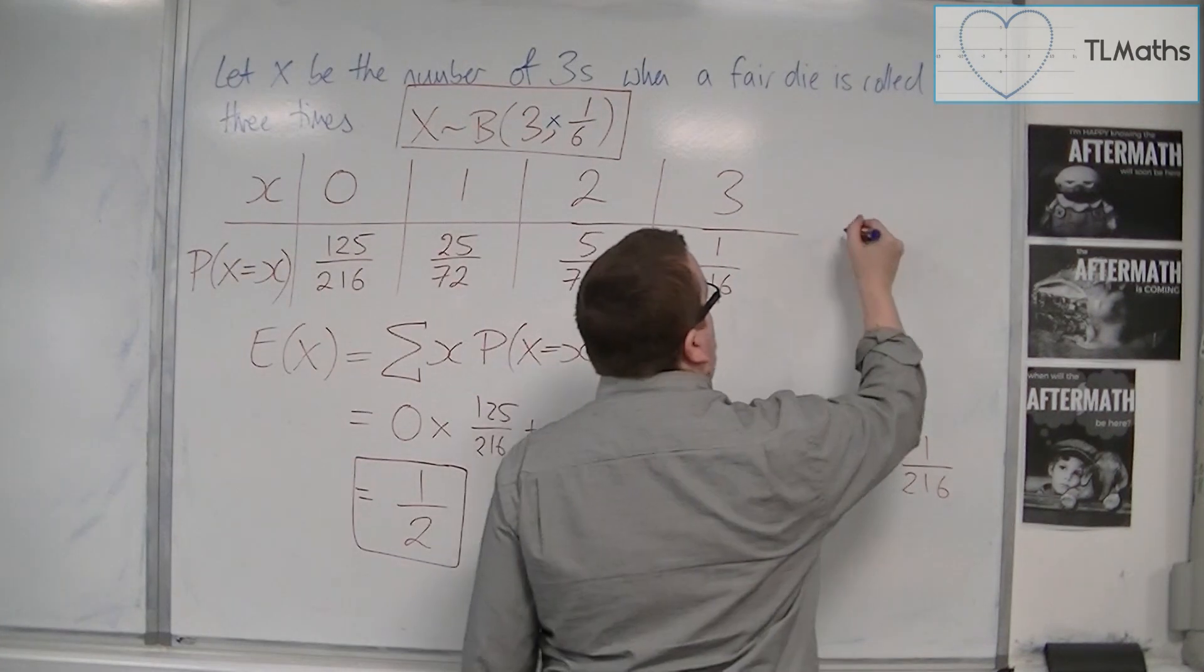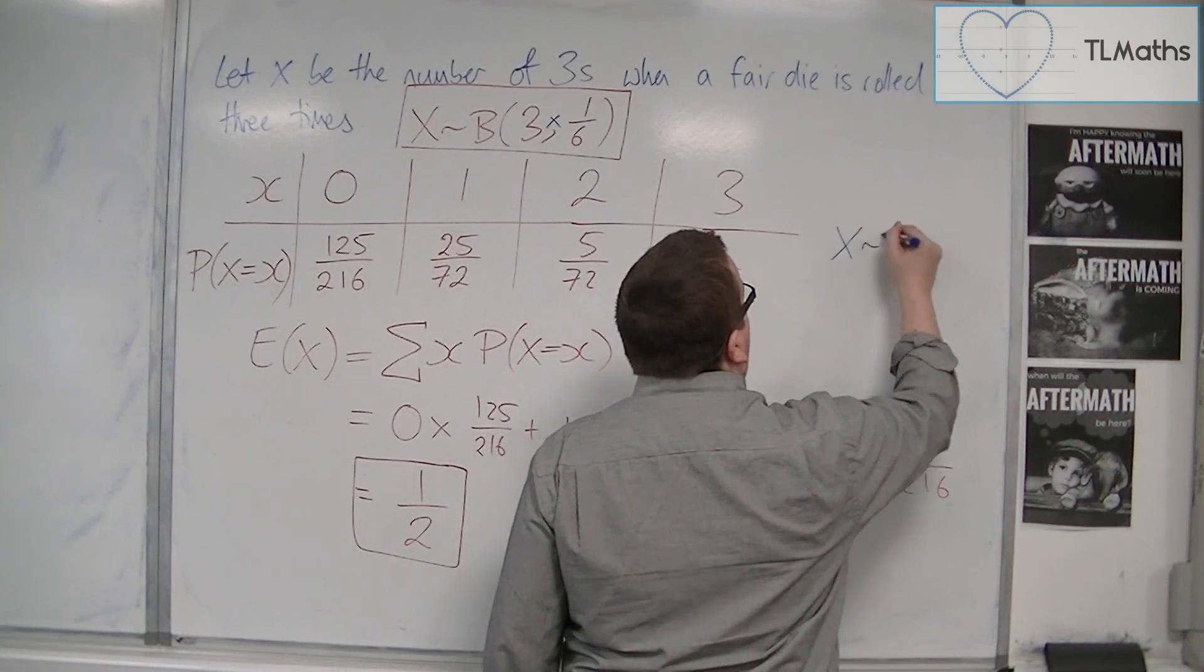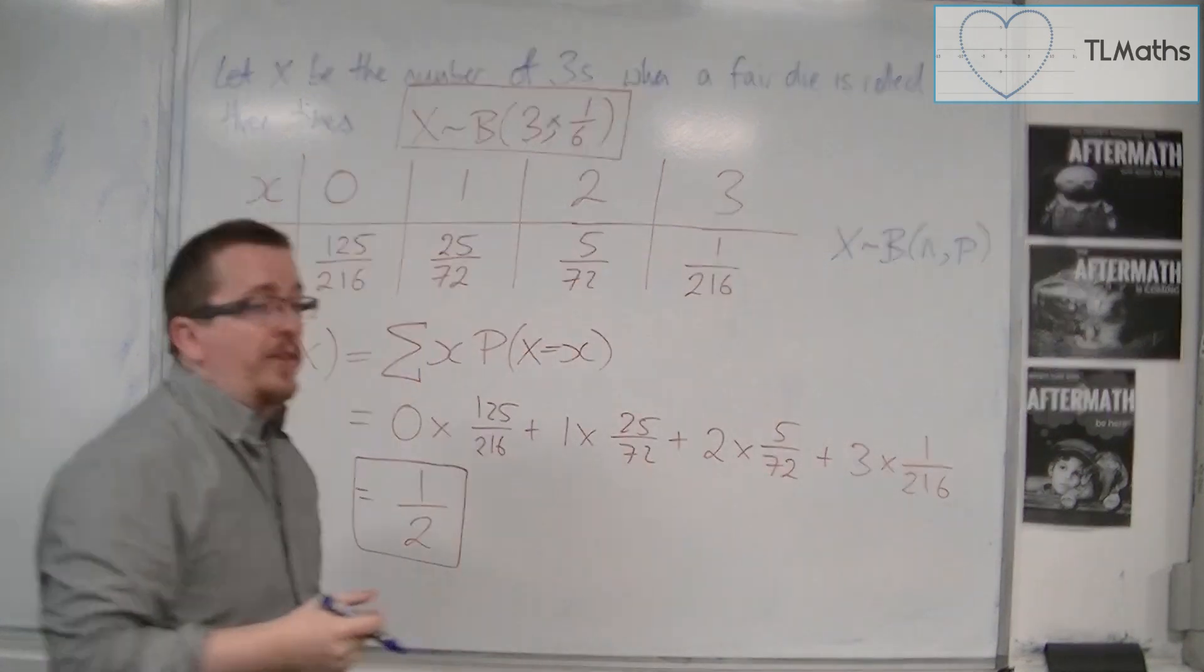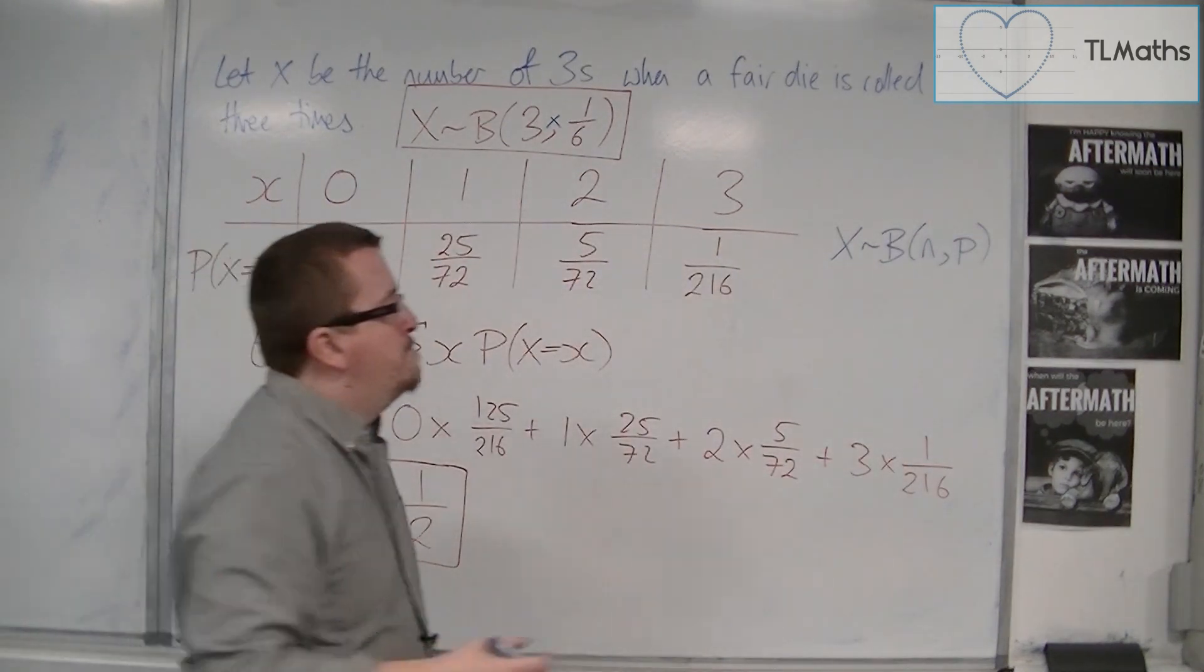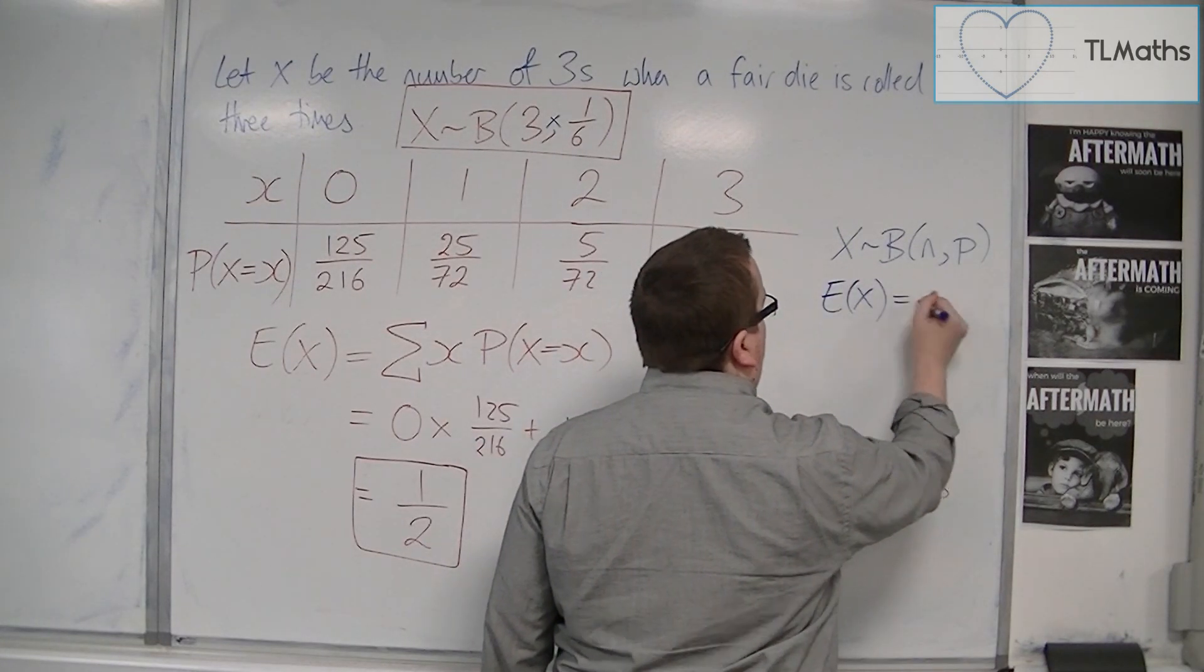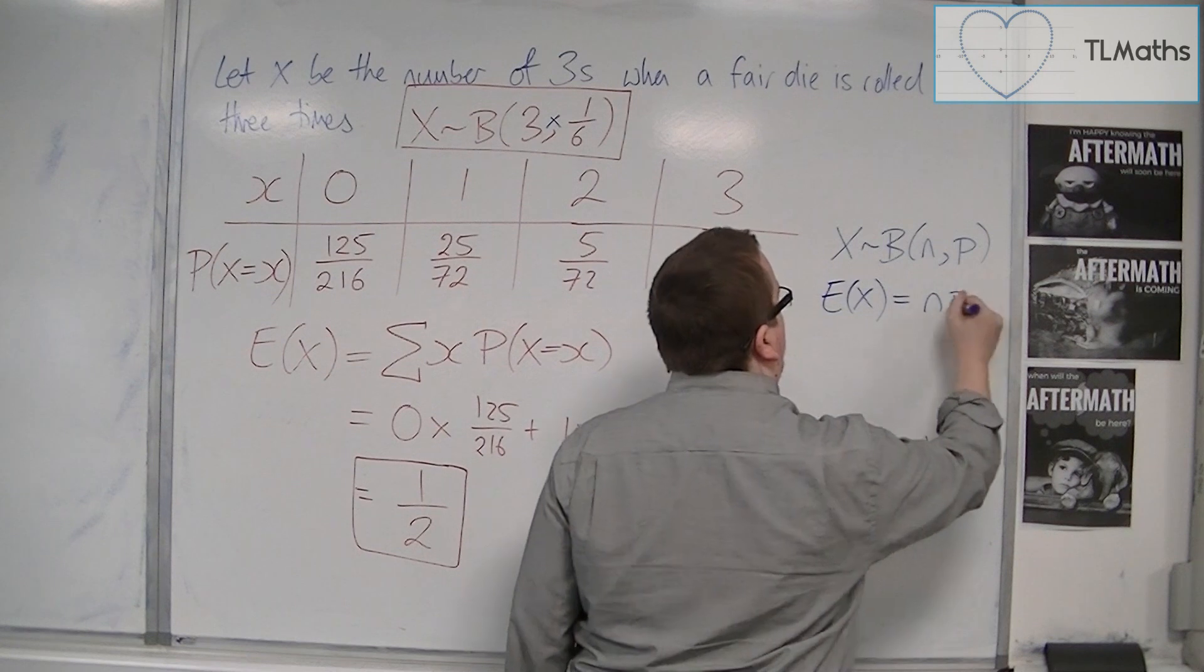So, in general, if x is binomially distributed with an n number of trials, the probability of success p, then the expected value, E of x, the mean, effectively, is just n times p.